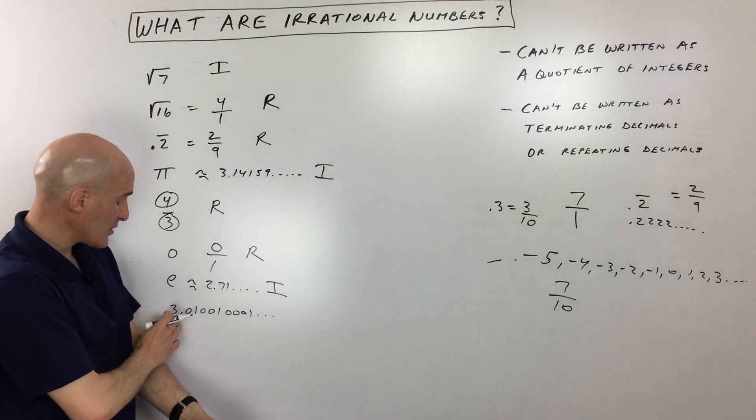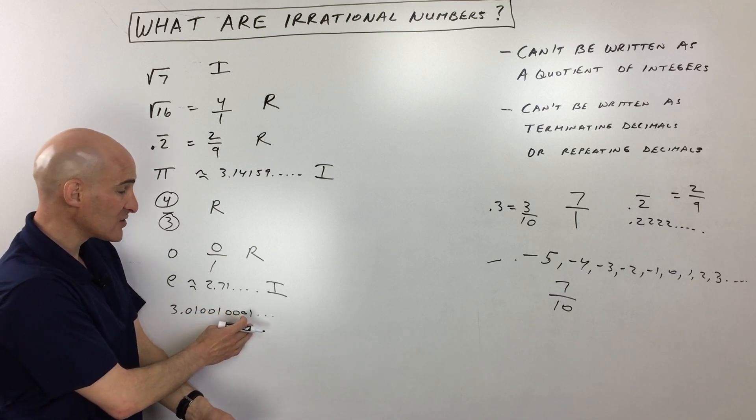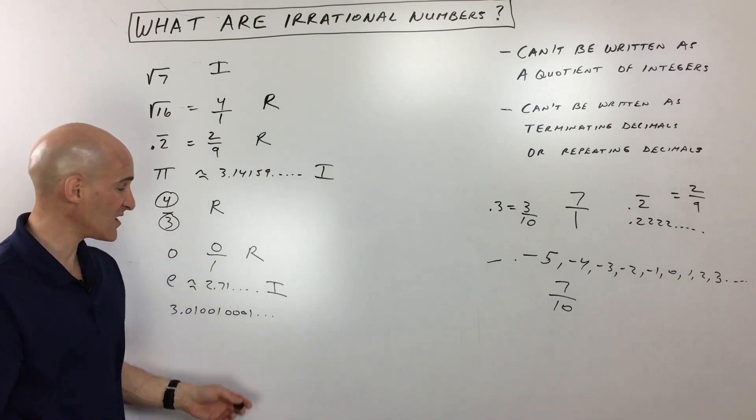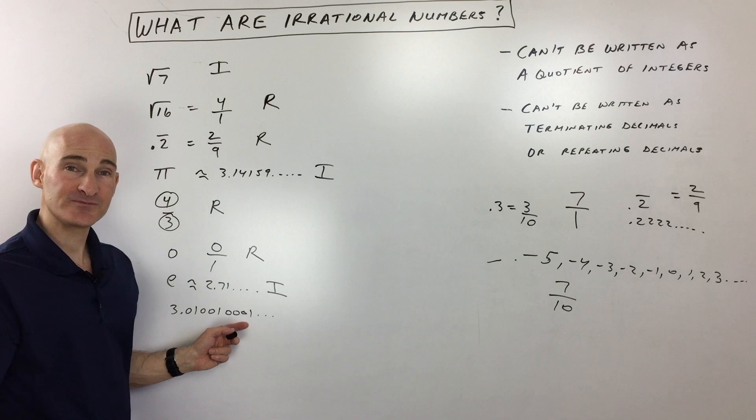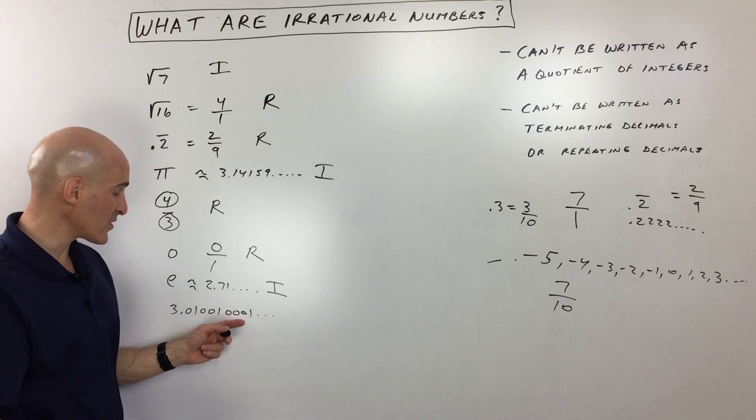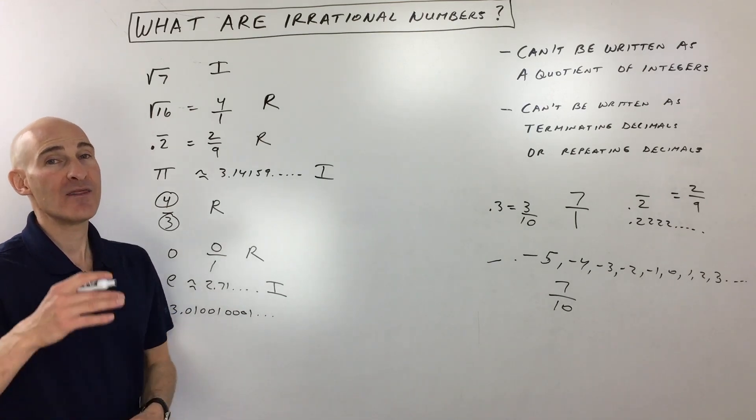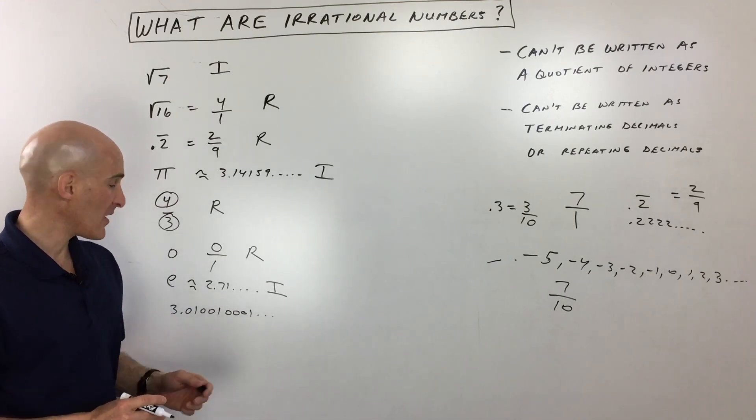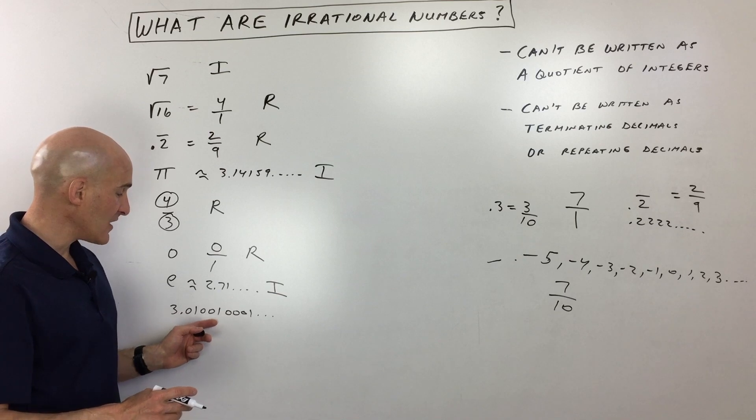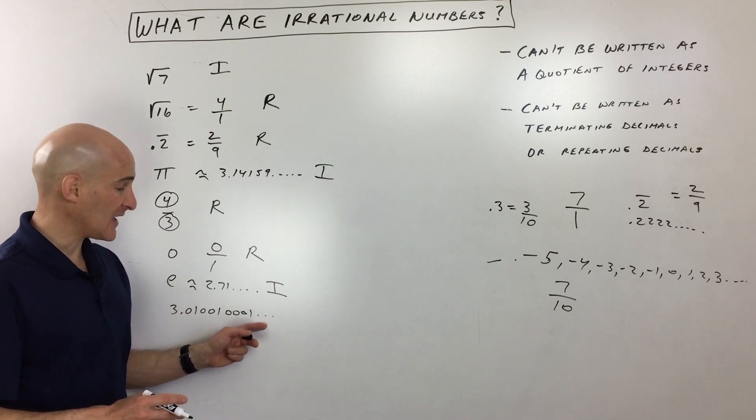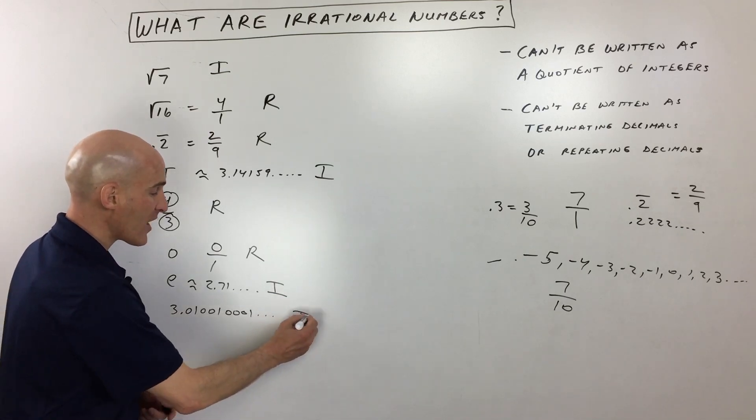And then this last one here, 3.01001001, this one tricks students sometimes because they see the pattern, okay, but they don't realize that it's not actually repeating. If this was 3.01010101, then it could be written as a ratio of an integer divided by an integer. But this one is actually not repeating, okay, and it's not terminating, so this is irrational.